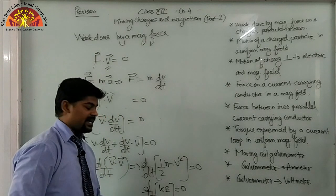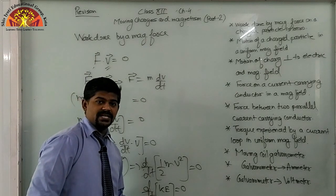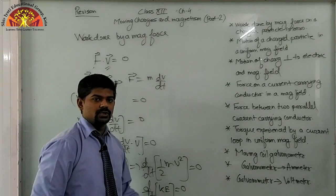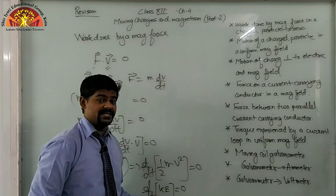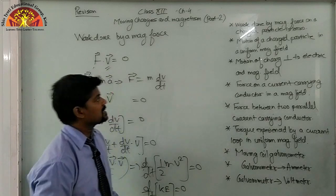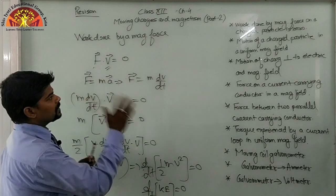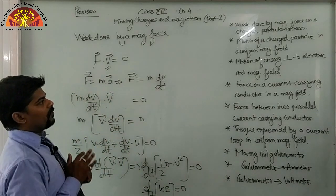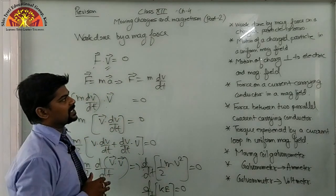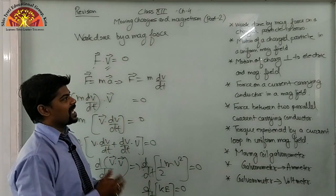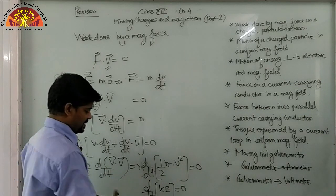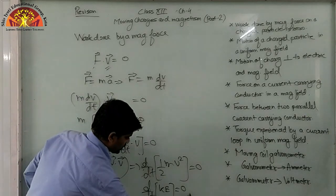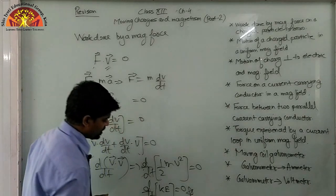So it will be d/dt of kinetic energy equals to 0. It means the work done by a magnetic force on a charged particle is 0. This is an important derivation.